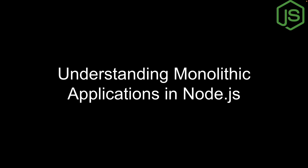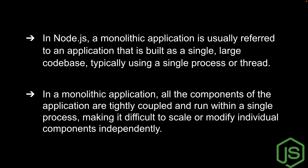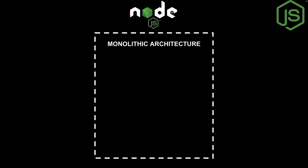In this video we are going to understand monolithic architecture and how monolithic applications are built in Node.js. In Node.js, a monolithic application refers to an application that is built as a single large code base, and typically it uses a single process or thread. In a monolithic application, all the components are very tightly coupled and run within a single process, making it difficult to scale and modify individual components independently.